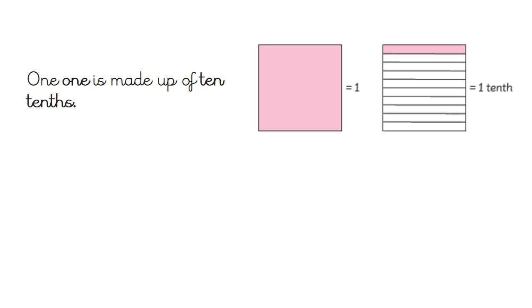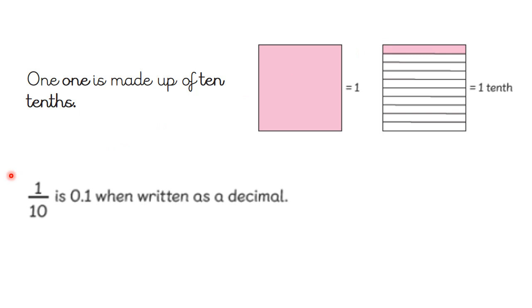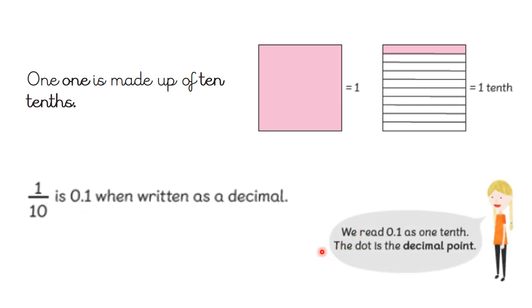Let's have a quick recap of what that video just told us. We know that one whole is made up of ten tenths. Here we have a square showing one whole, and the pink shaded section is one tenth of the whole. One tenth as a fraction is 1/10, but one tenth as a decimal is 0.1. We read 0.1 as 'one tenth', and the dot is the decimal point.